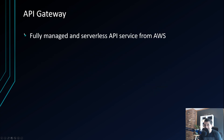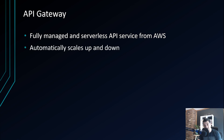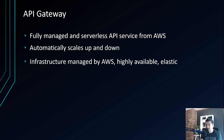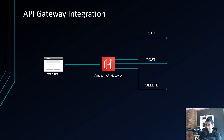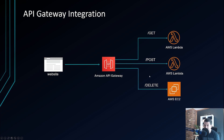Moving on to API Gateway — it is a fully managed and serverless API service from AWS. It also automatically scales up and down with traffic, and the infrastructure is managed by AWS, highly available and elastic. A typical API Gateway integration has your website calling different APIs hosted in Amazon API Gateway, routing different HTTP methods like GET, POST, and DELETE to different Lambda or EC2 endpoints.